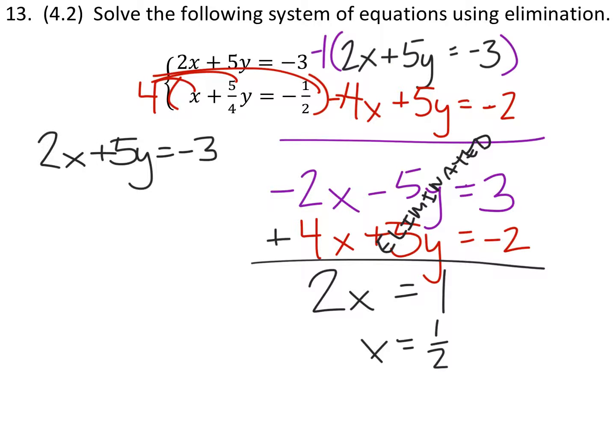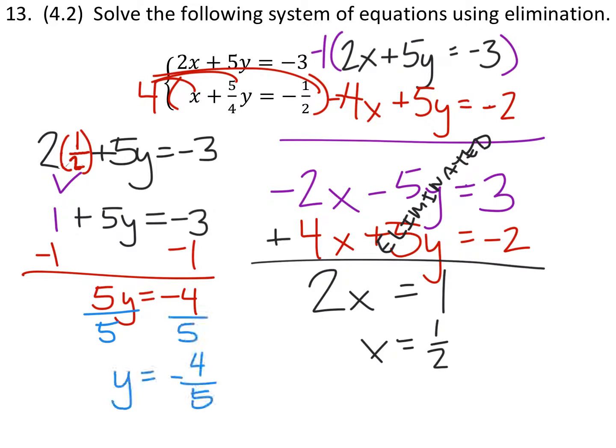So there you have it. But now I need to replace this x with this 1 half. So now that it's been replaced, we'll go ahead and multiply these two, and then the rest of it stays the same. And then we can subtract 1 from both sides. And then divide by 5 on both sides. And we find that y is a negative 4 fifths.